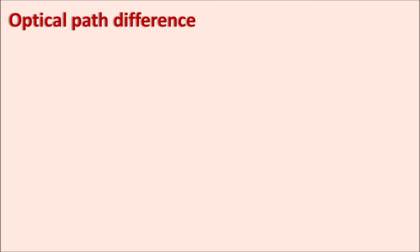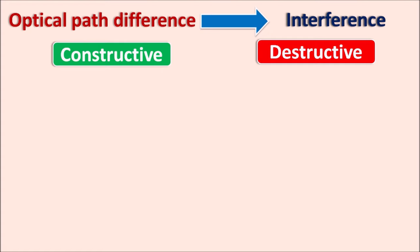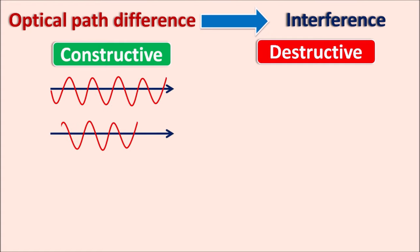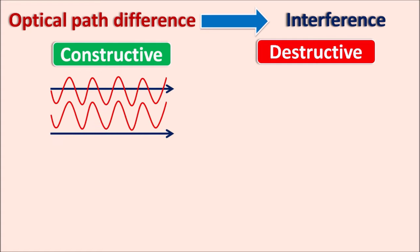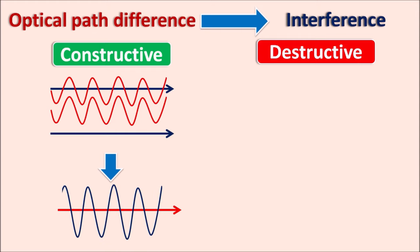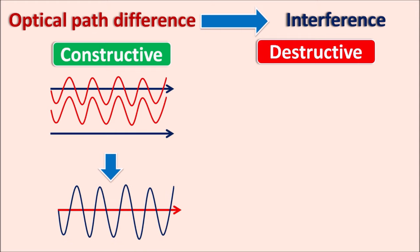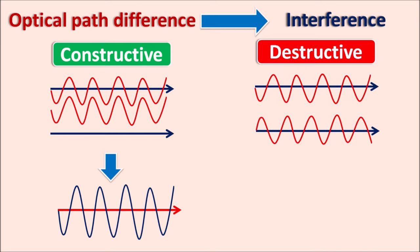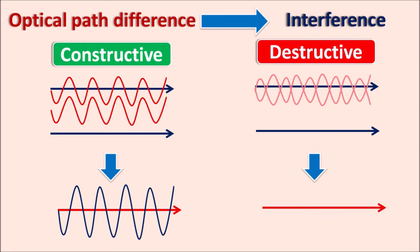The optical path difference is the difference between the path lengths of two optical waves, which may produce constructive or destructive interference. In constructive interference, two waves that are in phase — having similar crests and troughs — combine to produce a net wave with increased amplitude. In destructive interference, the crest of one wave meets the trough of another, canceling their amplitudes so no significant amplitude is observed. Constructive interference always increases amplitude, while destructive interference reduces it.